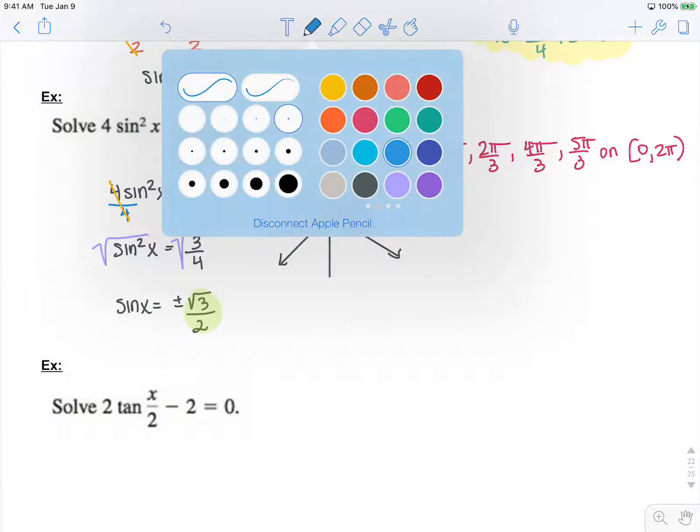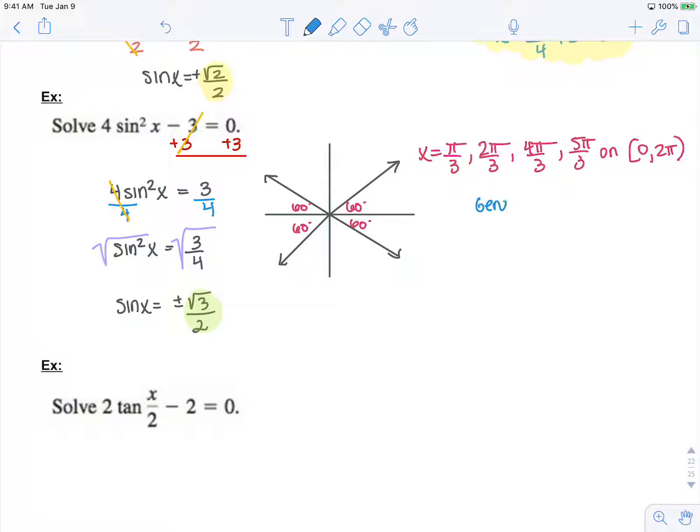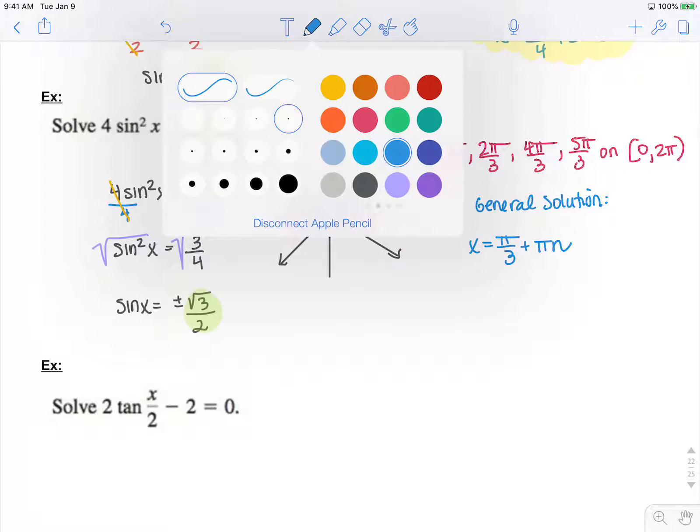But if I want my general solution, once again, to get from this angle to here I only have to add pi, and I will get all of those. So I know x can equal pi over 3 plus pi n, and that will handle those two.